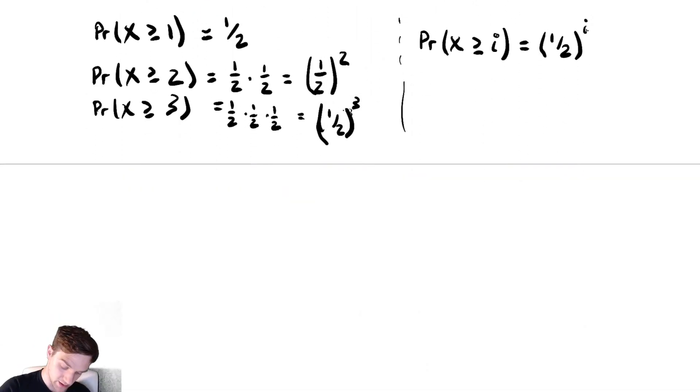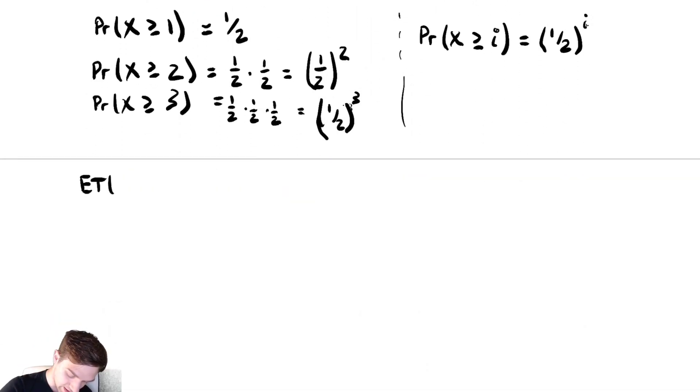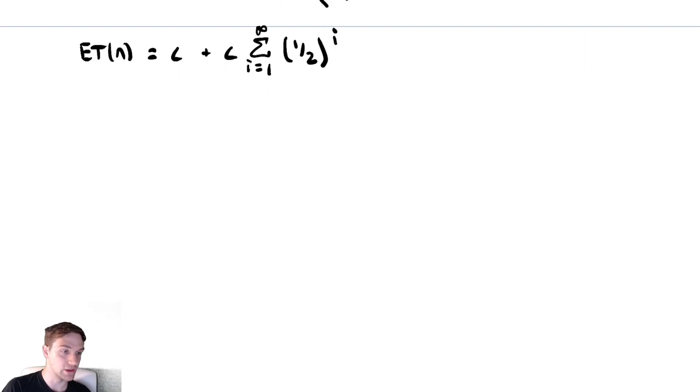Let's use that in our formula then. We have ET of n is equal to c plus c times the expected value of x, which is written as the summation from i equals 1 to infinity of 1 half to the i. That summation looks convenient at first glance, but we need to be careful because it does not start at 0. So this equals c plus c times it converges to the first term of the series, which is 1 half over 1 minus 1 half. And that just equals 1. That's 1 half over 1 half. So this equals 2c.